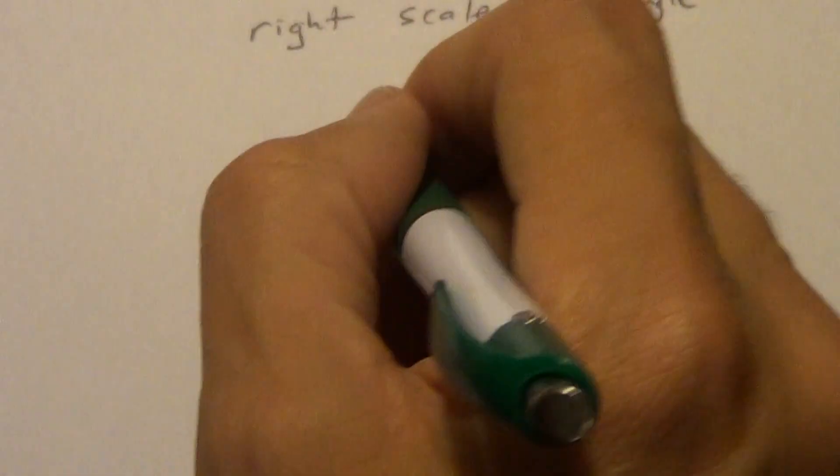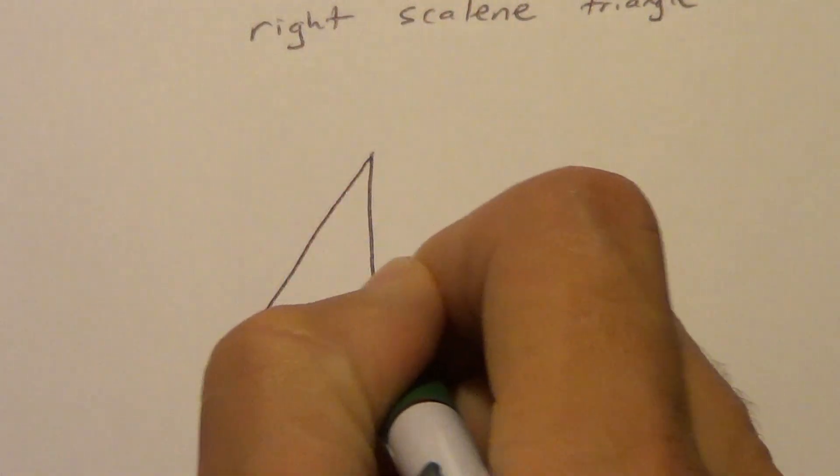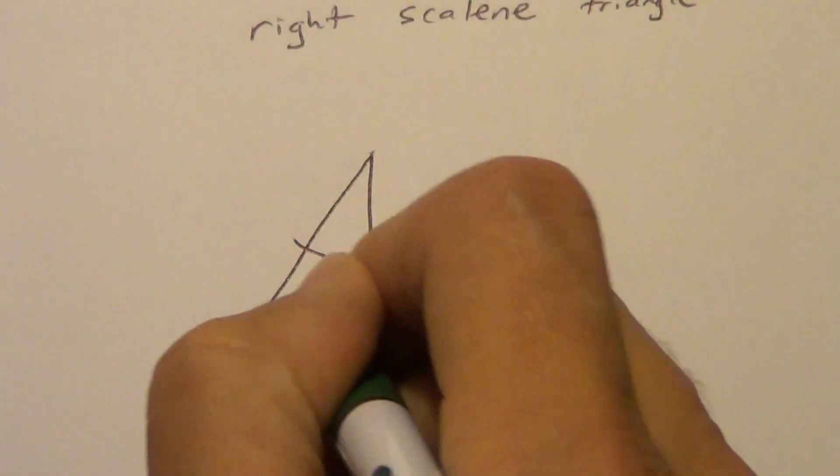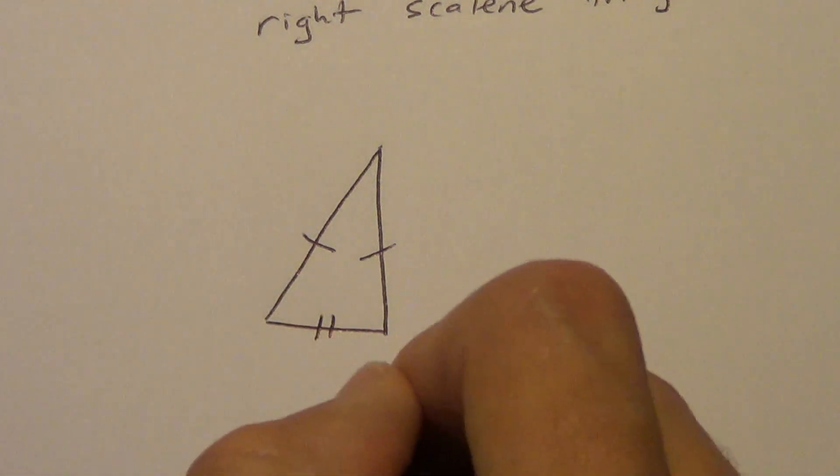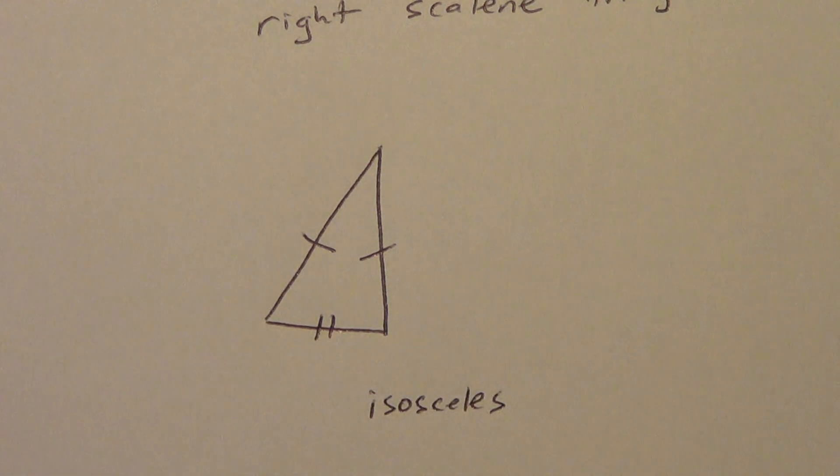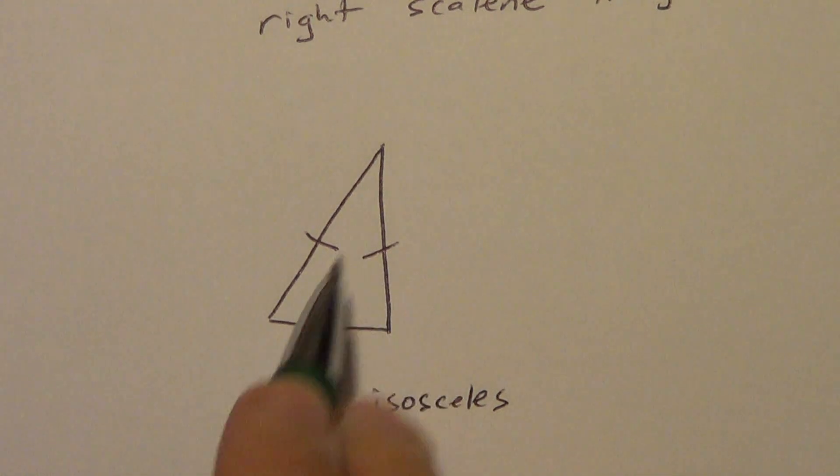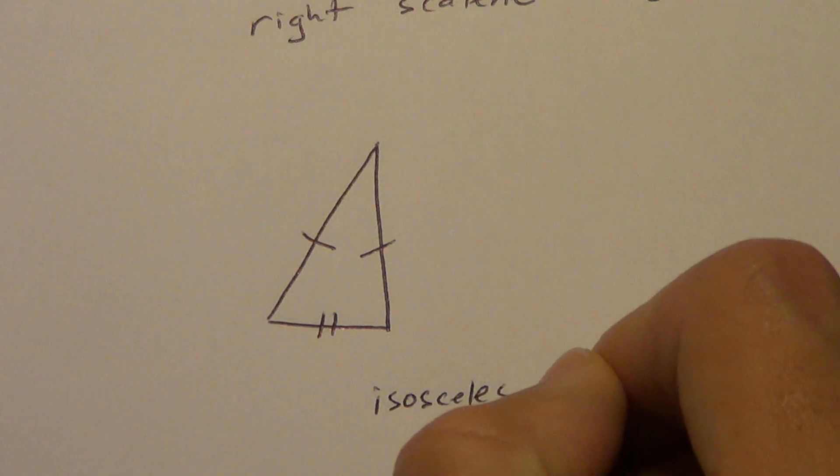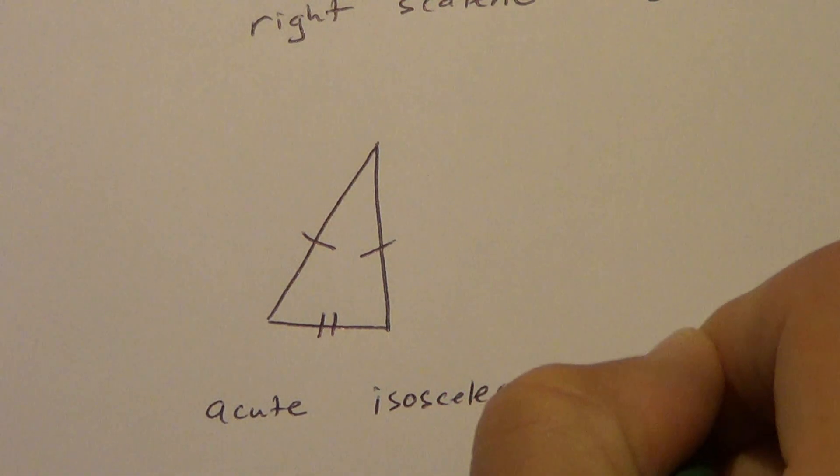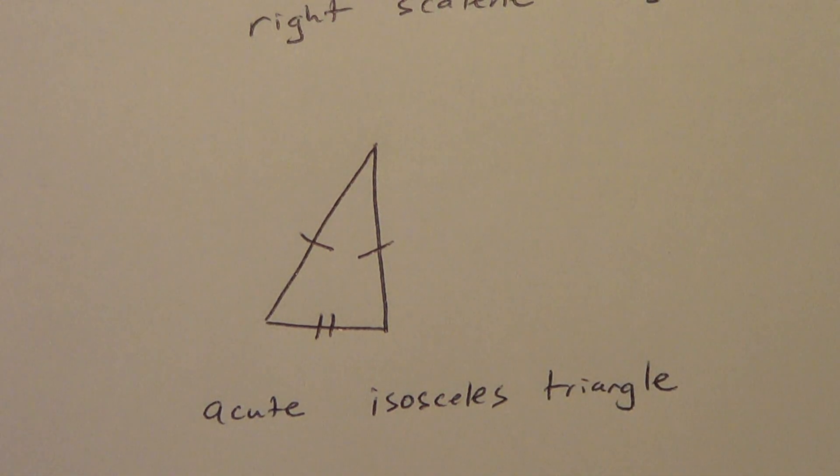All right. What if we have something like this? Okay. Remember, when you have the same marks here, it means those are congruent. Okay, so what do we have if we have two congruent sides? This is isosceles. All of the angles are less than 90. We're kind of going by looks to see that. All right. Later on, we'll do a little more detailed stuff. Maybe with some algebra. So this would be an acute isosceles triangle.